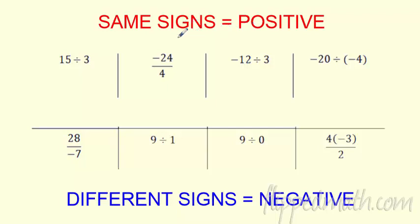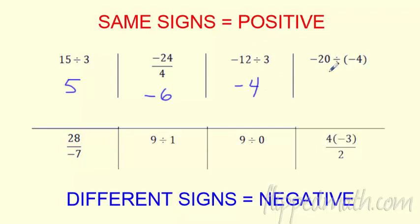The rules for division are the same as multiplication. So 15 divided by 3 is 5 — $5 per ticket. Negative 24 divided by 4: signs are different, so it's negative 6. A negative divided by a negative — signs are the same, so that's a positive 5. And the negative sign could be in the bottom: 28 divided by negative 7 is a positive divided by a negative, so negative 4. The negative can be on top, on bottom, or out in front — same negative answer.